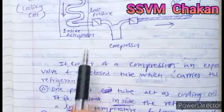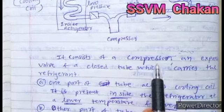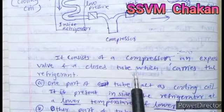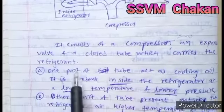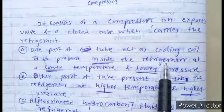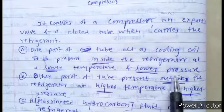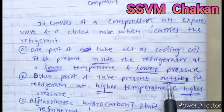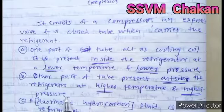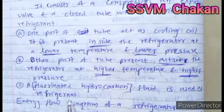In summary, a refrigerator consists of a compressor, expansion valve, and a closed tube that carries the refrigerant. One part of the tube acts as a cooling coil inside the refrigerator at lower temperature. The other part of the tube is present outside the refrigerator at higher temperature and higher pressure. A fluid is used as the refrigerant.